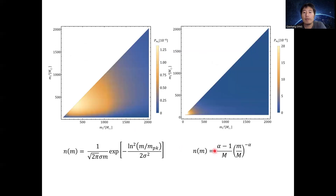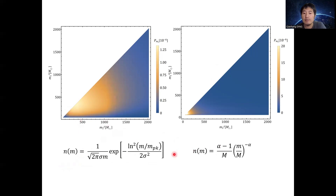For the window function, the definition is the ratio of observed PBH binaries to the total number with given intrinsic masses and redshift. This is calculated by integrating over the detectable orbital parameters — semi-major axis and eccentricity — weighted by their probability distribution. The detectable orbit parameter range is defined by a signal-to-noise ratio threshold of 8. For the redshift distribution of PBH binaries, we use the merger rate of primordial black hole binaries versus redshift as an approximation. We then calculate the probability distribution of redshifted mass for different PBH mass functions — here using the log-normal and power-law mass functions as examples.